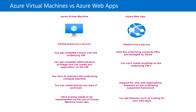In the Azure virtual machine we get complete administrative privileges and we can install any application on the VM. We also need to install patches and upgrades, since it is completely managed by ourselves. But in the case of Azure web app, since we do not have any control, we cannot install any applications on the underlying VMs.